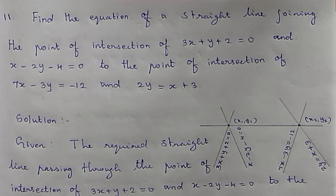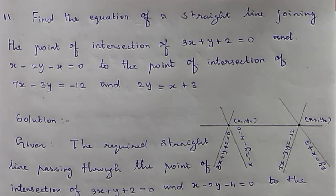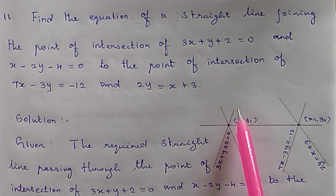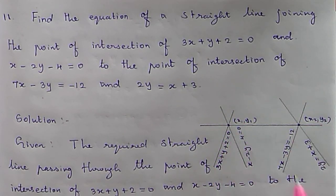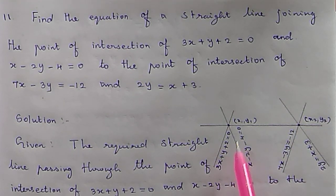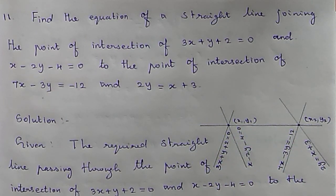Problems 9 and 10 were about parallel and perpendicular lines. Here, one pair of lines intersects and another pair intersects. We find each point of intersection, then join them. The diagram shows: first and second lines intersect at point (x1, y1), and third and fourth lines intersect at point (x2, y2). We then apply the two-point straight line formula.